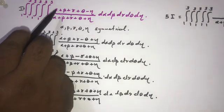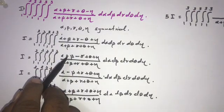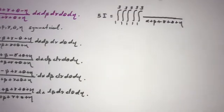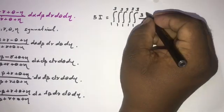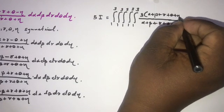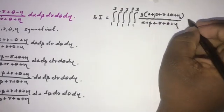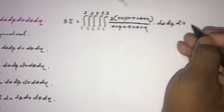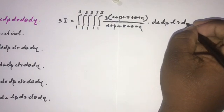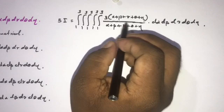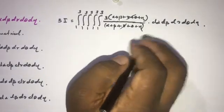Taking beta: beta plus beta plus beta minus beta plus beta gives 3 times beta. Similarly, we get 3 times gamma, 3 times theta, and 3 times eta. So the numerator becomes 3 times (alpha plus beta plus gamma plus theta plus eta), which cancels with the denominator.